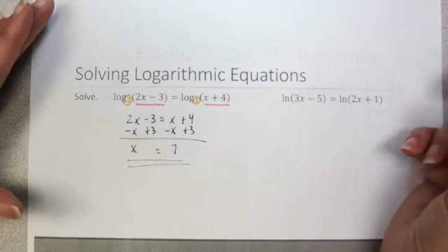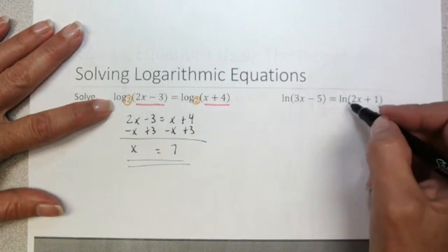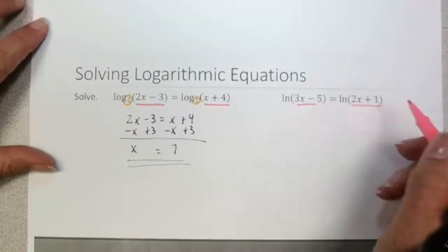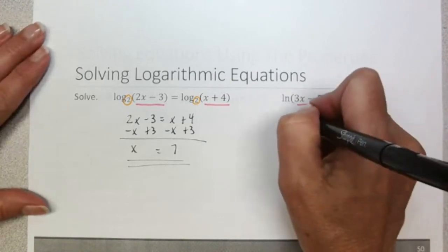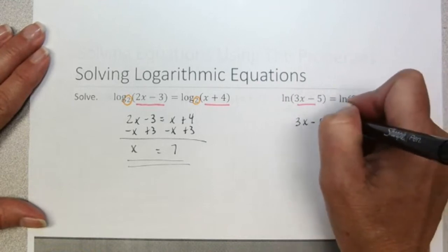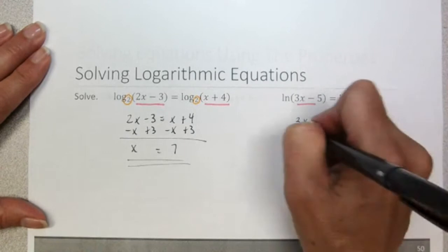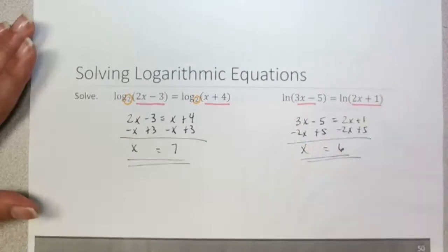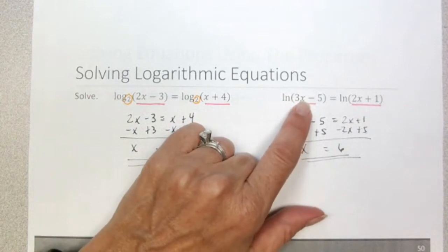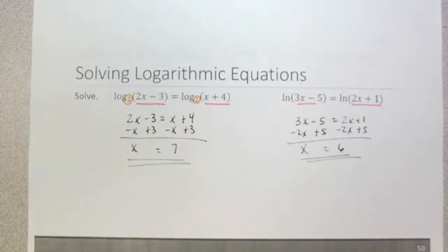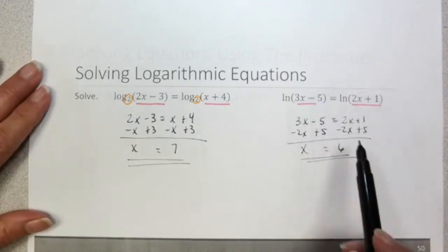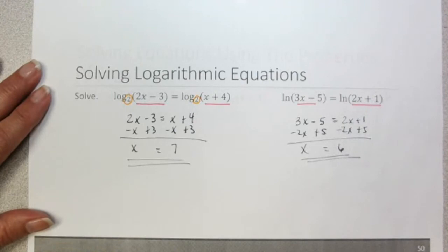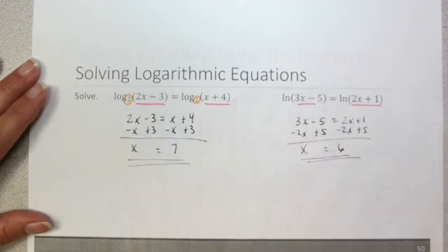Here's another example using the natural log. It doesn't matter what the base is as long as both sides have the same base. Natural log equals natural log means log base e equals log base e. By the one-to-one property, the arguments must be equal: 3x minus 5 equals 2x plus 1. Subtracting 2x and adding 5 to both sides gives x equals 6. Checking the domain: 3(6) minus 5 is 13, positive; 2(6) plus 1 is 13, positive. And when x equals 7 in the earlier example, 14 minus 3 and 7 plus 4 are also both positive.